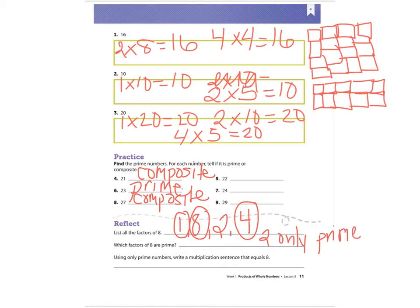We're not going to count one. It says use only prime numbers to write a multiplication sentence that equals eight. If I'm only using prime numbers, that means I'm only using the number two. Two times two equals four, and times two again equals eight.